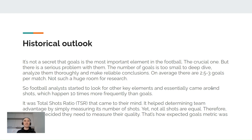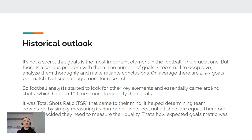Let's dive into history a bit. It's no secret that goals are the most important element in football — the crucial one. But there is a serious problem with goals: the number of goals in a match is too small to deeply analyze and make reliable conclusions. On average, there are about 2.53 goals per match — not much room for research. So football analysts started looking for other key elements and essentially came around shots, which happen about ten times more frequently than goals. It was total shots ratio that came to mind first, helping determine team advantage by measuring the number of shots. Yet not all shots are equal, so analysts decided they needed to measure the quality of shots. That's how the expected goals metric was born.